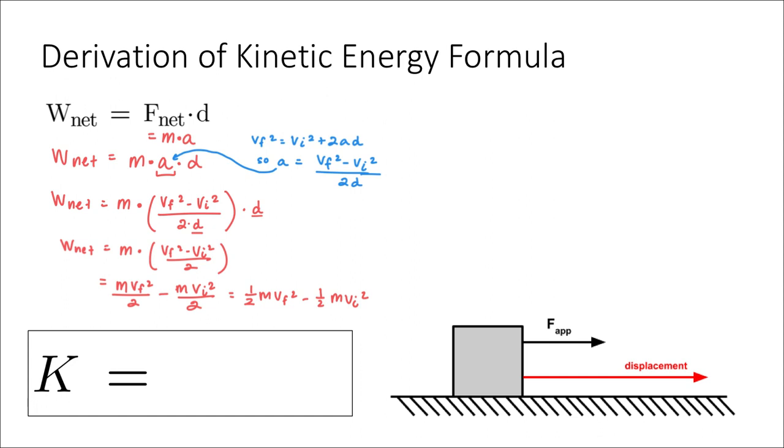And so what this tells us is that the net work on an object is equal to the 1 half mvf squared term. We know that to be the kinetic energy, maybe at the end. Minus 1 half mvi squared. That's the kinetic energy at the beginning.